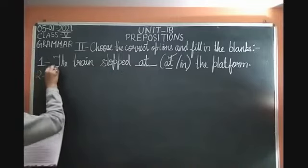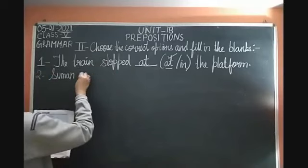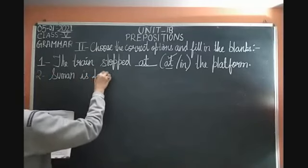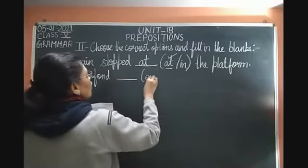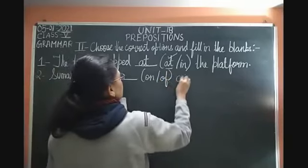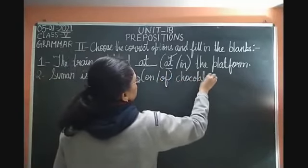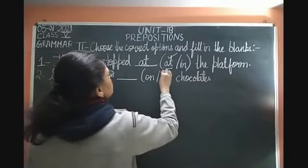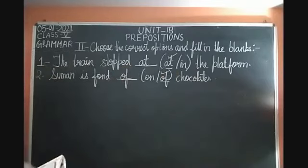Second: Suman is fond ___ chocolates. Options are 'on' or 'of.' 'On' is used when something is on top, but when someone is fond of something, we use 'of.' So write 'of' in the second blank — Suman is fond of chocolates.